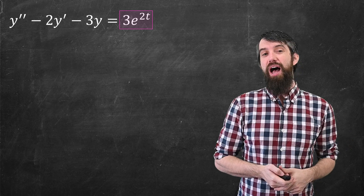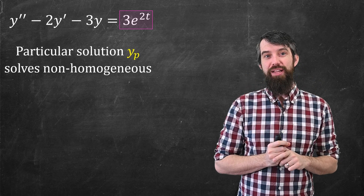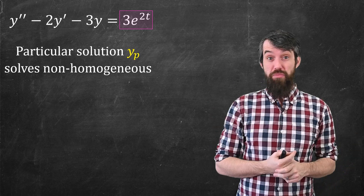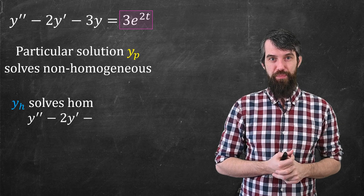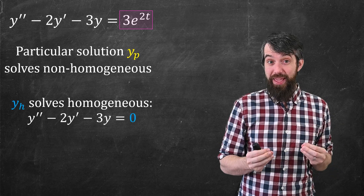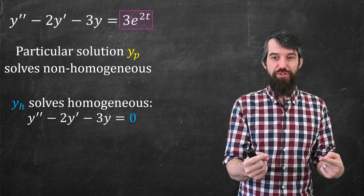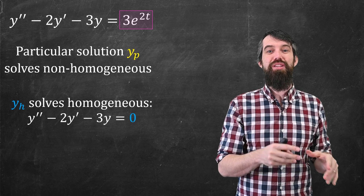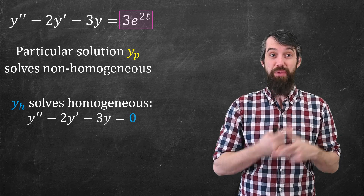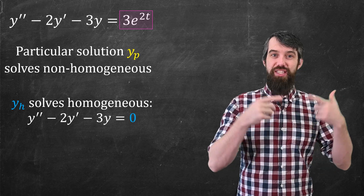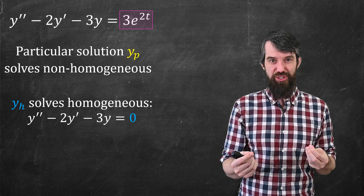Some terminology first. I'm going to call a particular solution — y sub p for particular — to be just any solution, not the general solution, not all possible solutions, just any one that you so wish. And then I'm going to let y sub h be the general solution to the same equation if it was homogeneous — you keep the left-hand side but set the right-hand side equal to zero, which is a type of equation that we know how to solve. So y sub h is the general solution, which means it has constants, and y sub p is just any one particular solution.